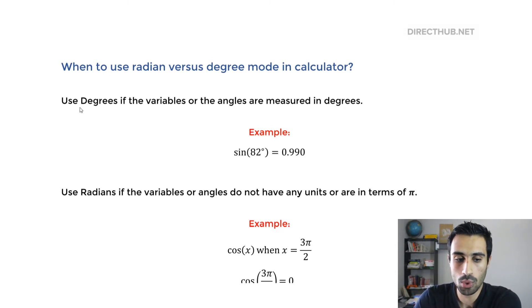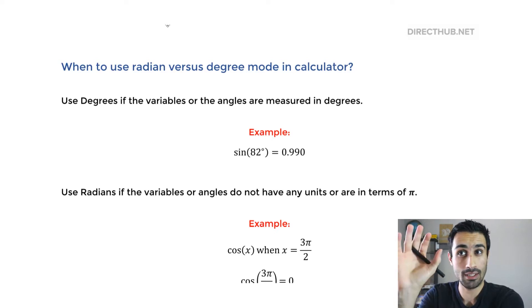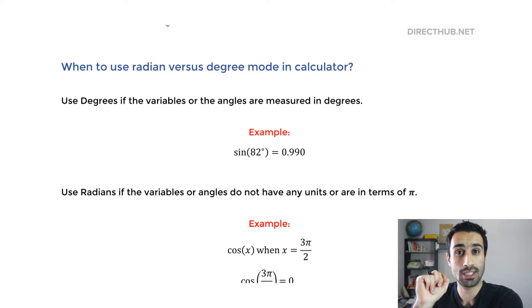So for the first part, let's focus on the degree mode first. We want to use degrees if the variables or the angles are measured in degrees. In other words, if you're given degrees, let's say 45 degrees, make sure you're in degree mode.